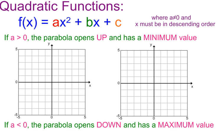At the top of your notes, you have a lot of notes written for you. The first part shows you what a quadratic function looks like in standard form. A, B, and C are going to be integers. You can have zero x or a constant of zero, but you can't have a zero x squared.